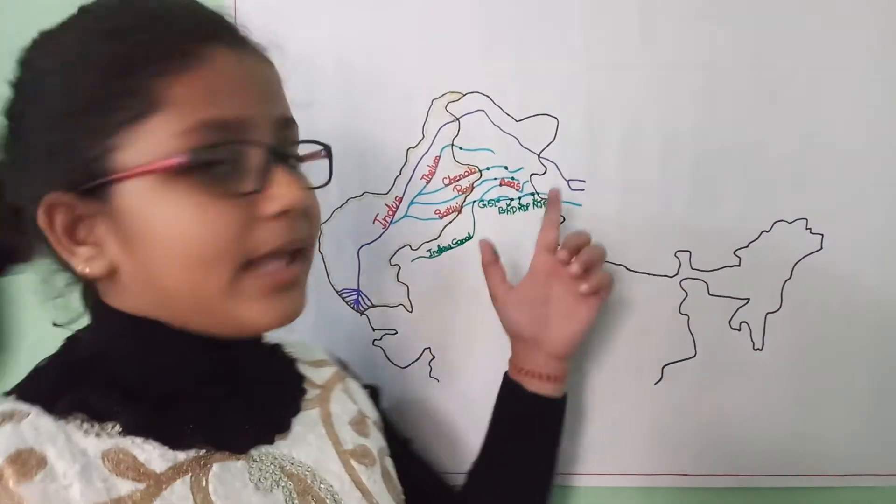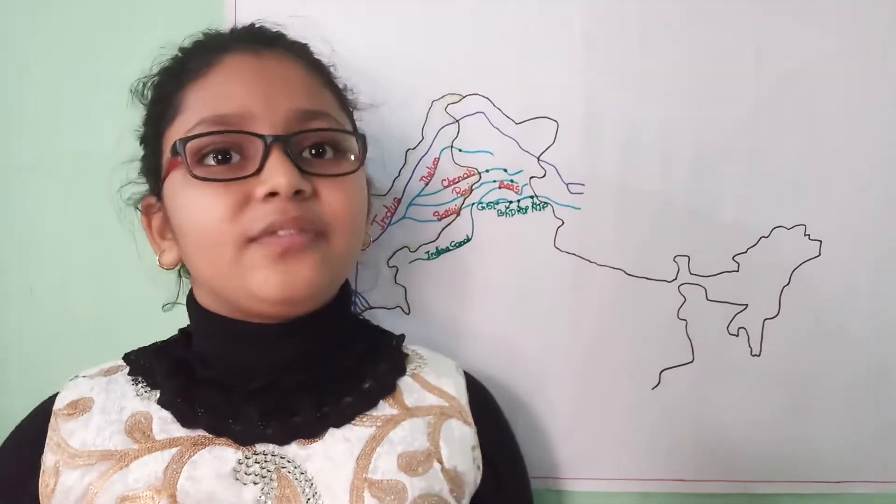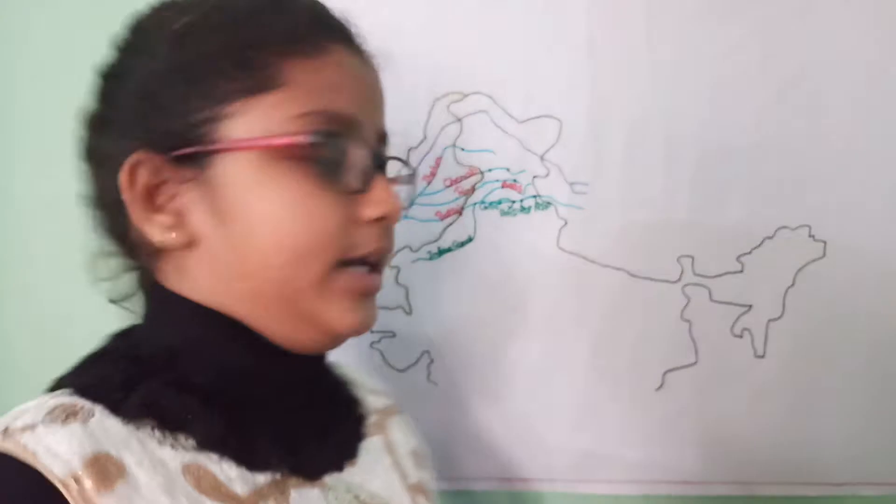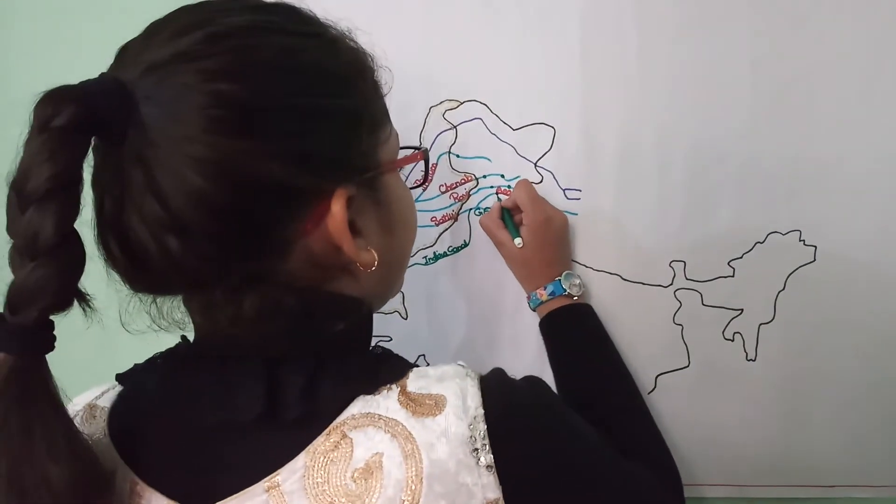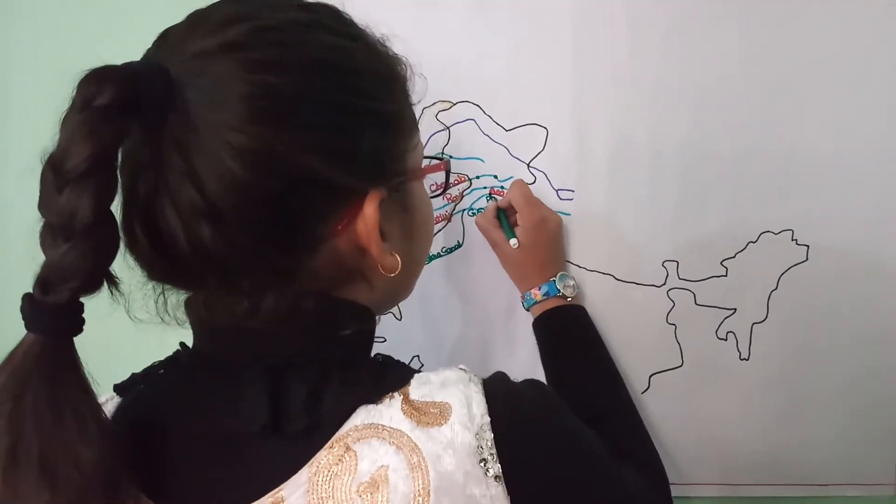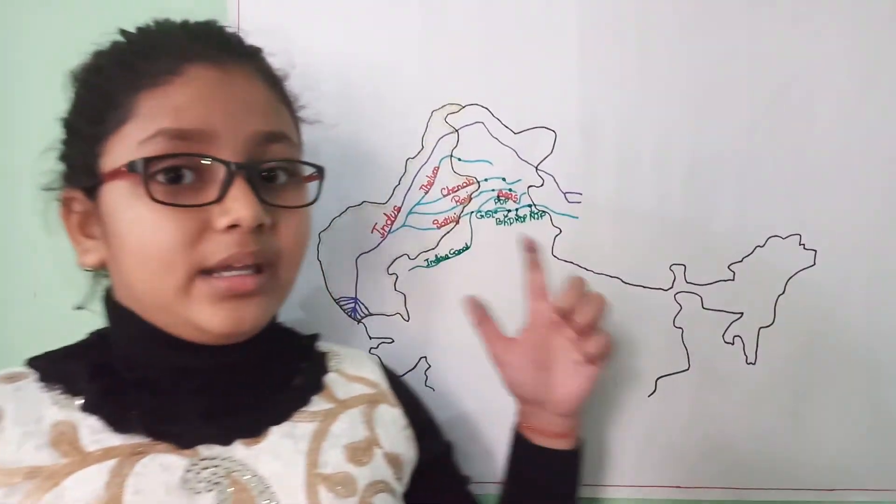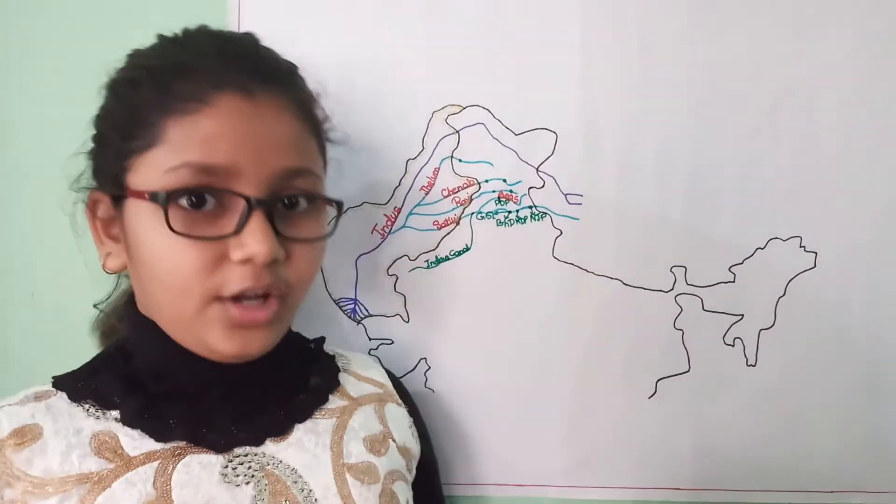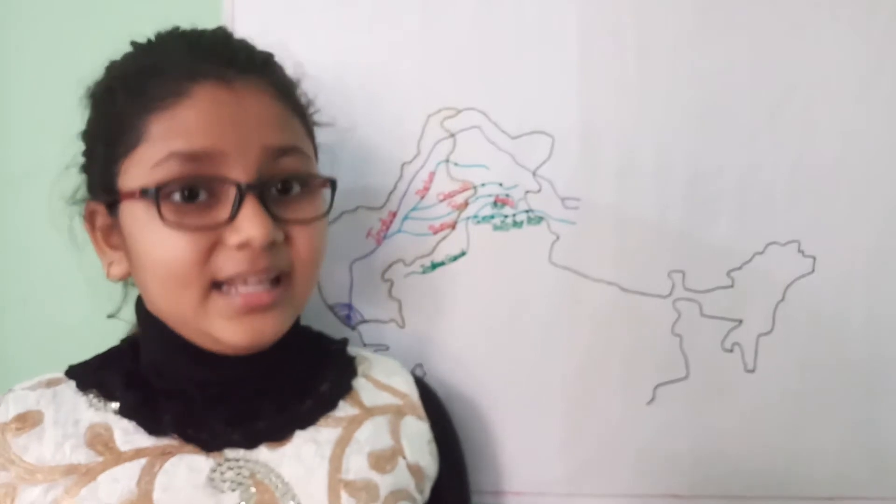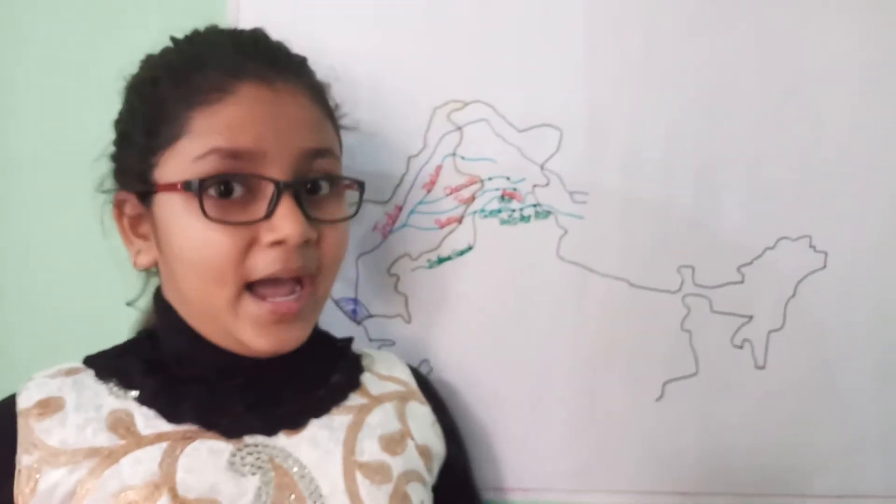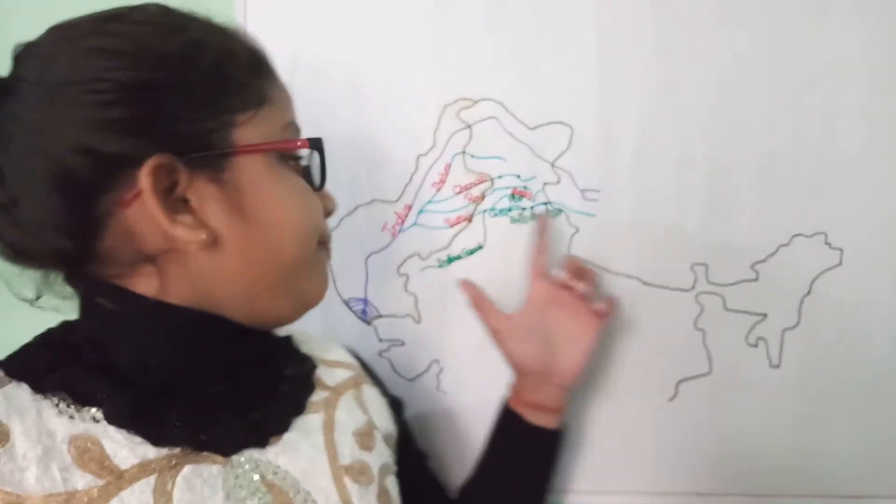So now comes the Beas River. On the Beas River, we have the Pong Dam. So it is here, Pong Dam Project. Its reservoir beside it is the Maharana Pratap Sagar Lake, and its total capacity is 360 MW.